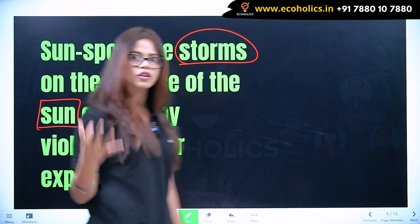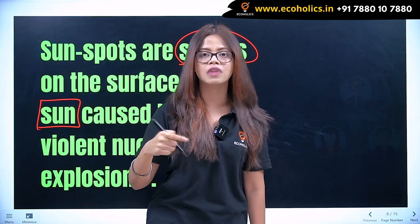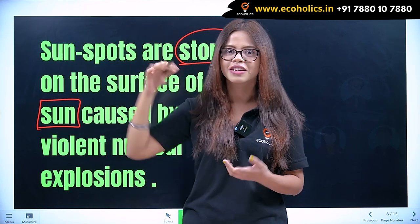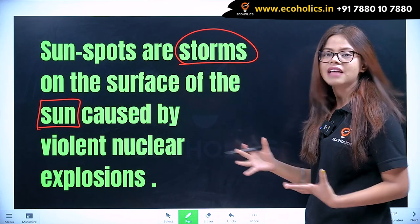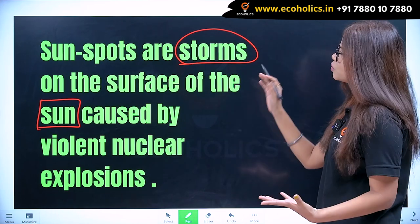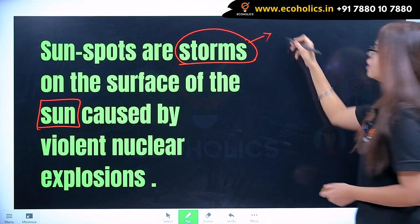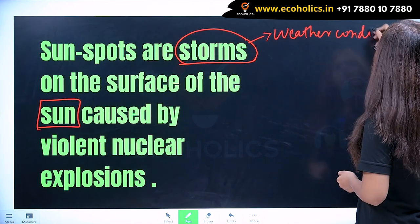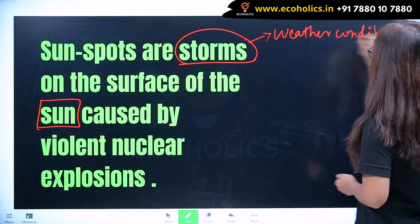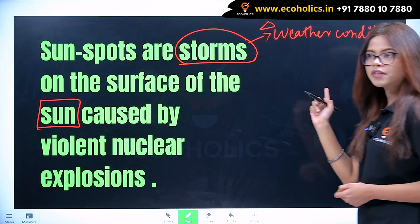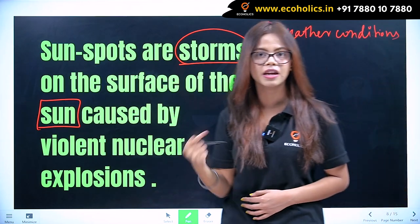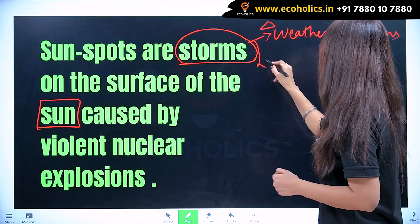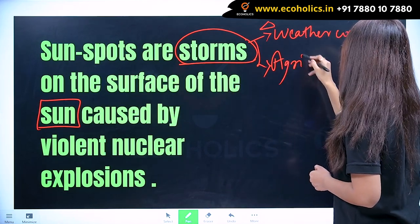Now, the violent nuclear explosions on the surface of the Sun — how does this affect our business activity? What happens is the weather conditions change, and this affects our economy. You all know that the sector most affected is our agricultural sector.